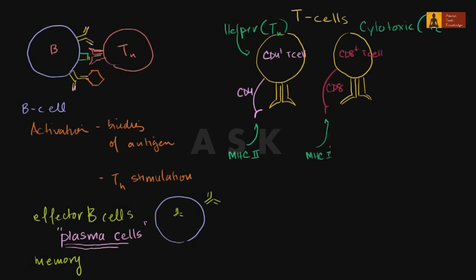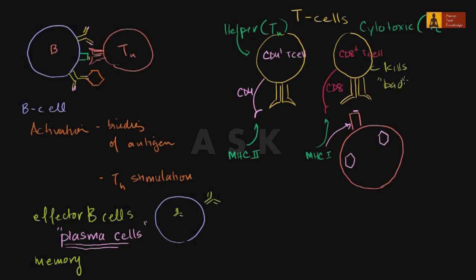To remember what they do: the CD8 cell binds to the MHC1 complex presenting some antigen. Every nucleated cell in the body expresses an MHC1 complex, so this is the case where something wacky is happening inside a cell — maybe a virus infected it, maybe it's cancerous. The CD8 kills these bad cells, because otherwise they'd keep producing viruses or keep dividing and spreading cancer.